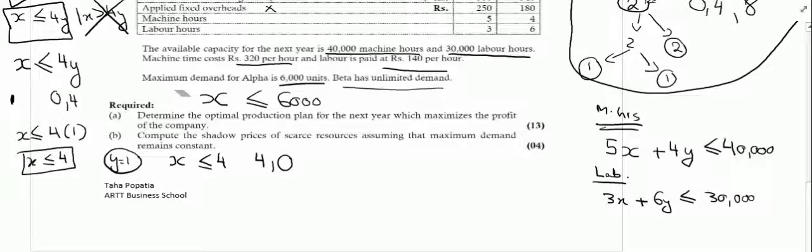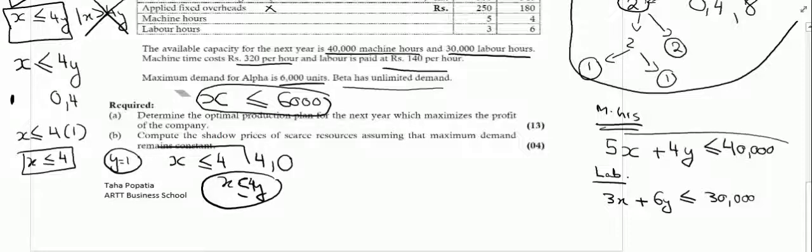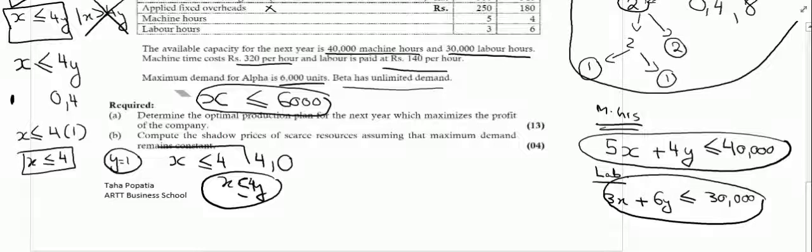So our inequalities are x is less than or is equal to 4y, x is less than or is equal to 6000, 5x plus 4y is less than or is equal to 40000, 3x plus 6y is less than or is equal to 30000. Now you can plot these inequalities on a graph and find the feasible region. Let us calculate the amount of contribution as well.